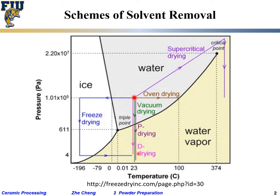Sometimes we combine heating and vacuum together — that's how some vacuum ovens work. You combine some vacuum and some heat, which means you move diagonally on the phase diagram, not purely horizontal or vertical. The other path would be so-called freeze drying.